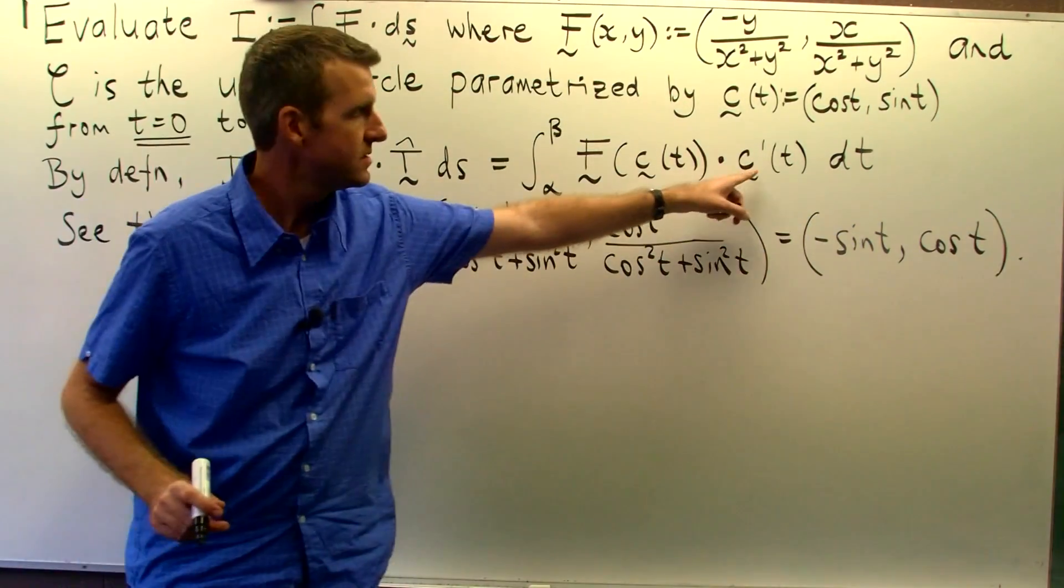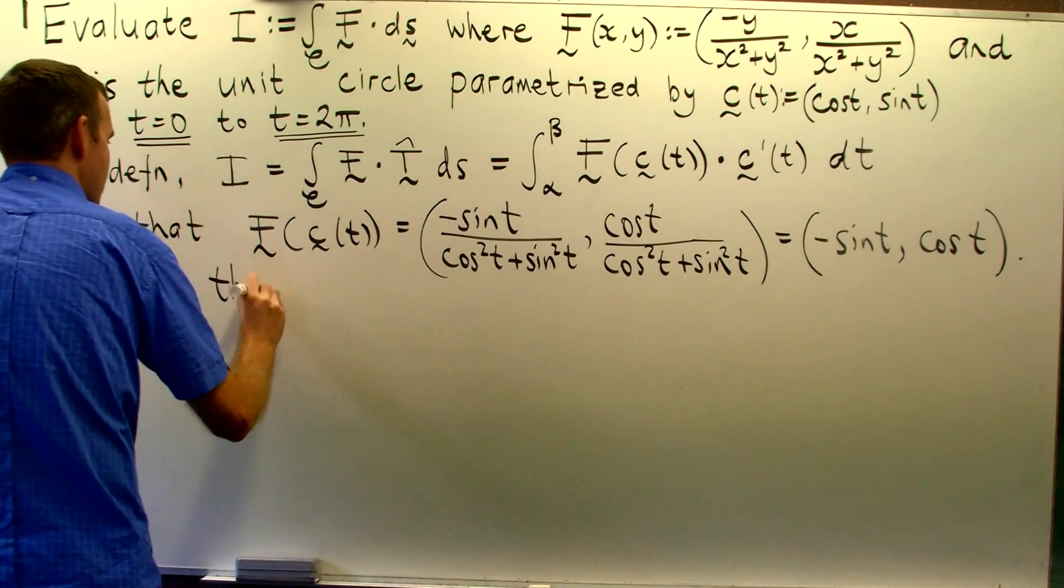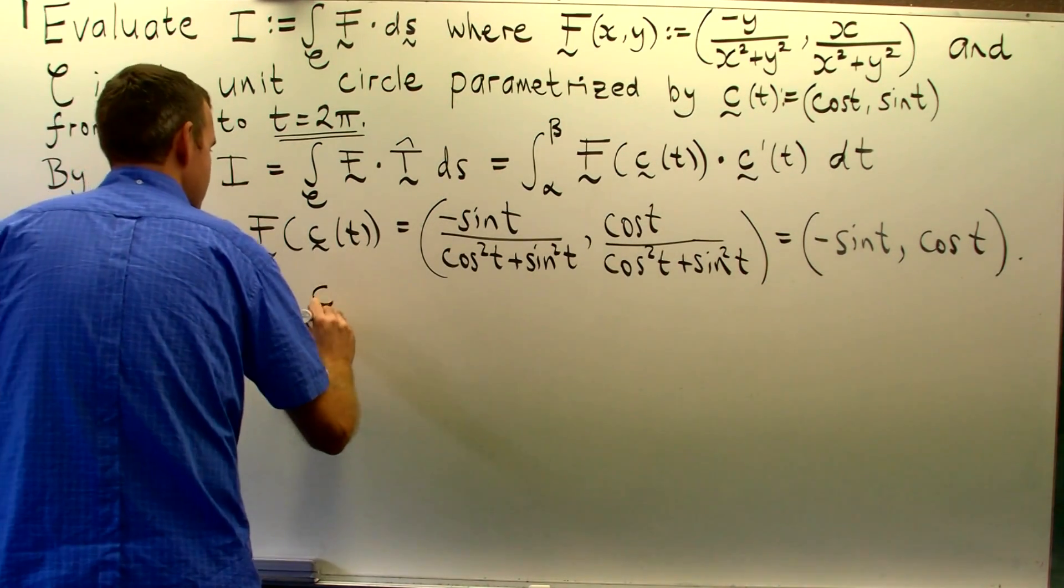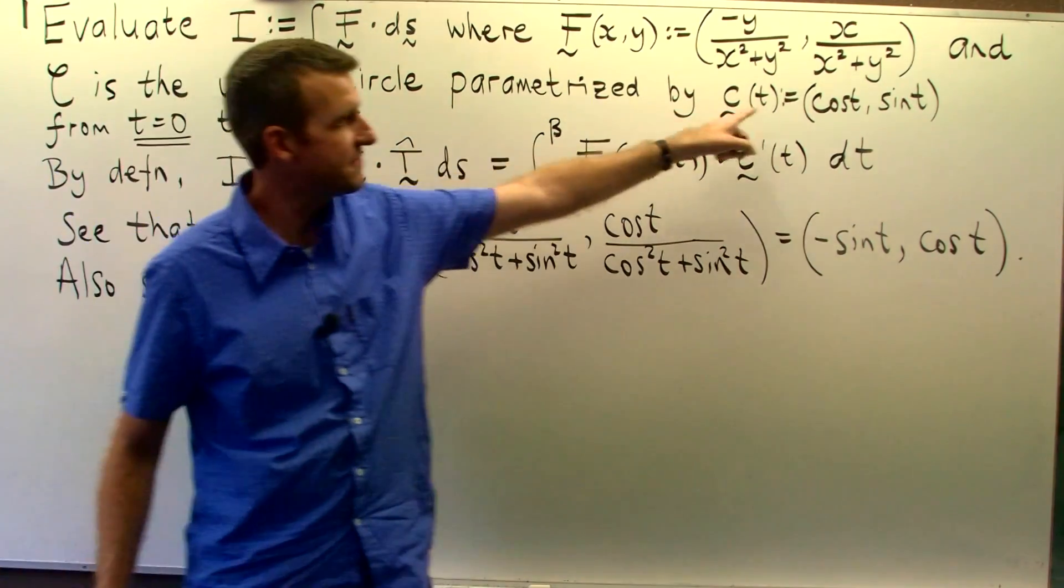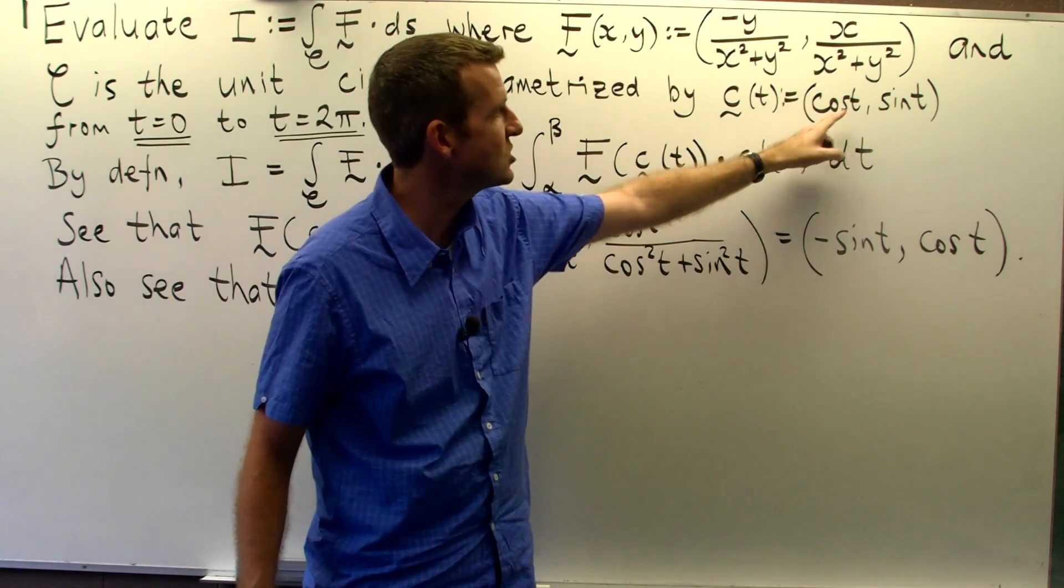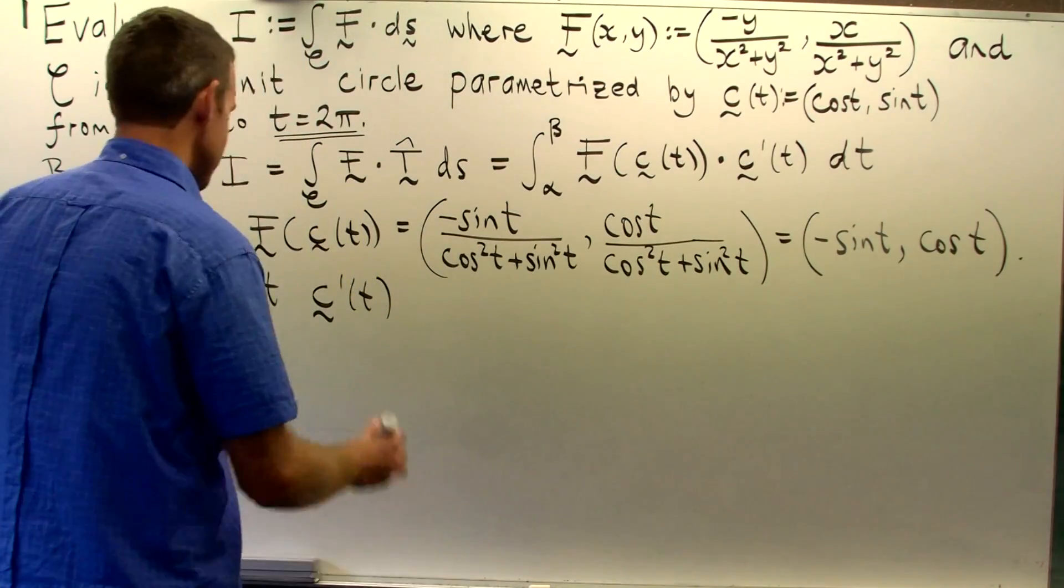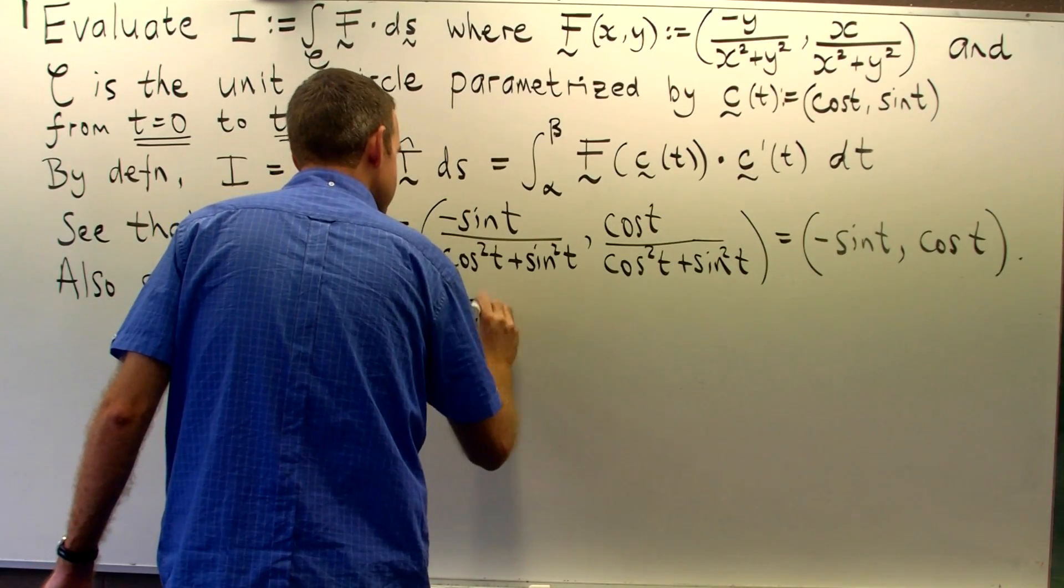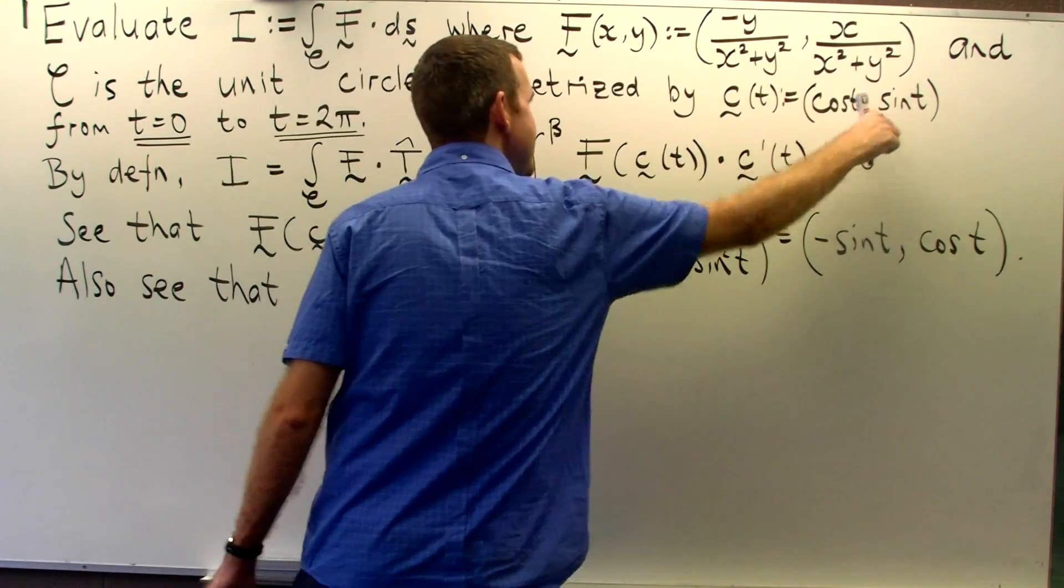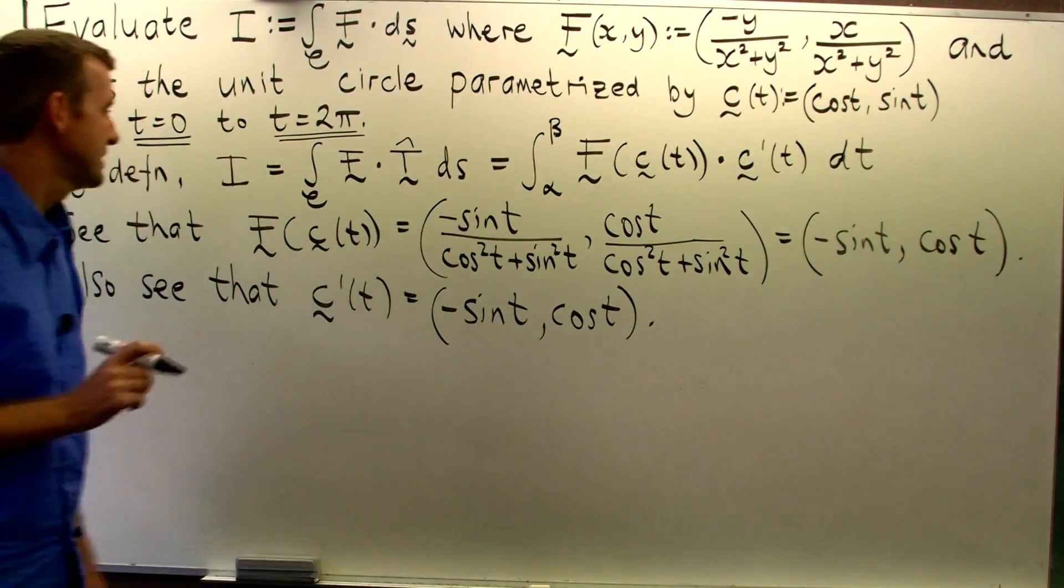So let's work out this derivative now. Now to differentiate a vector valued function, all we do is differentiate each component with respect to t and write as a new vector function. So if we differentiate the first component, it will go to negative sin t. If we differentiate the second component, it will go to cos t.